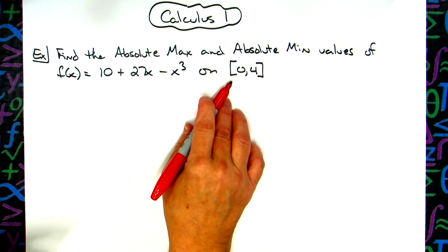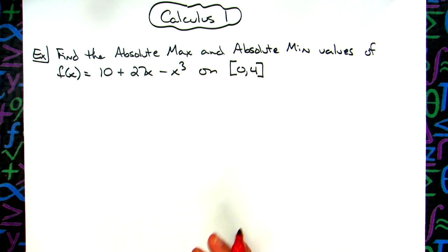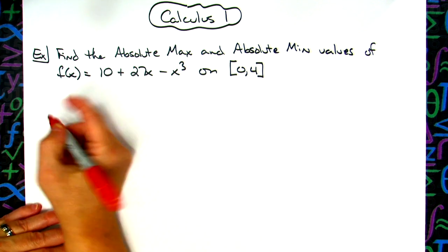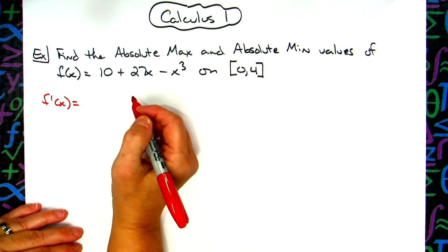So you have to understand that when we're looking at just that interval from 0 to 4, then we only have to look at endpoints and critical numbers. So the first thing I'm going to do is take my function and calculate that derivative so that I can find my critical numbers.